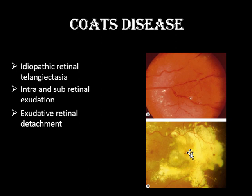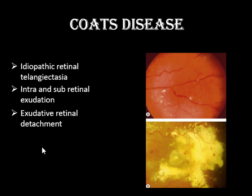There is aneurysmal dilatation of the capillaries in a specific area, a bunch of capillaries becoming bulbous, leading to leakage. So Coats disease is idiopathic retinal telangiectasia with intra- and sub-retinal exudation. Leakage of intravascular contents into the sub-retinal space or into the retina leads to exudative retinal detachment. Presentation is typically in the first decade of life.